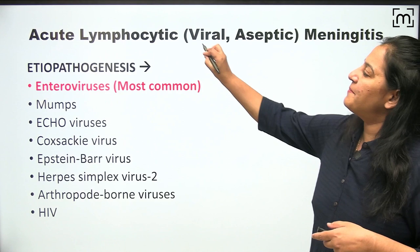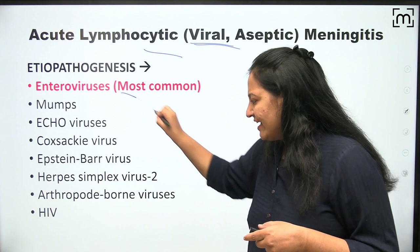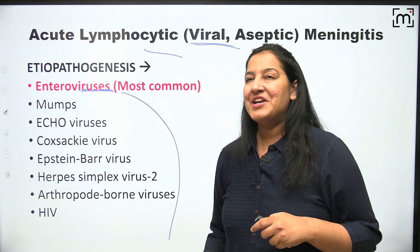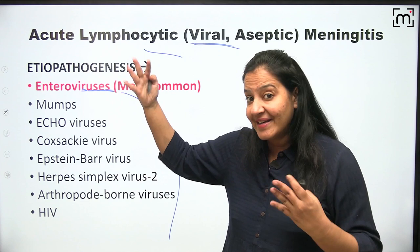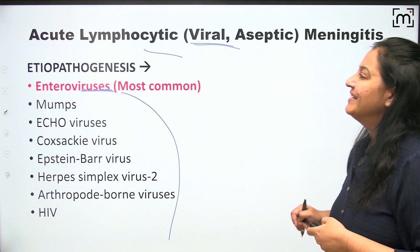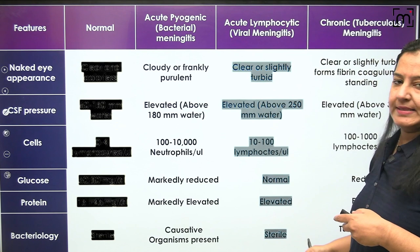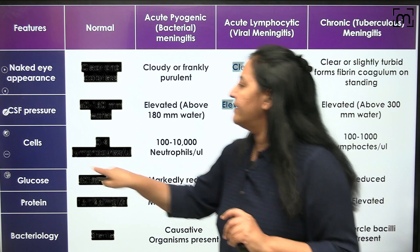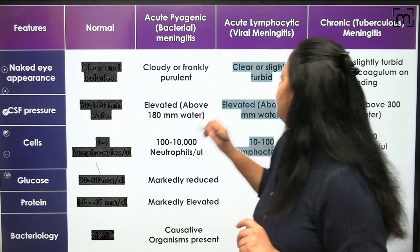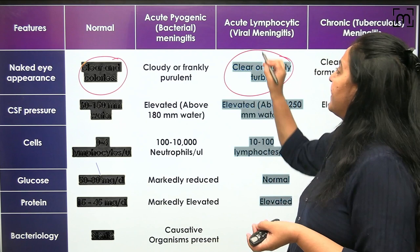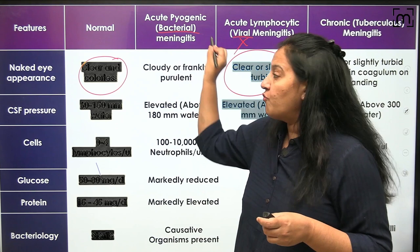The second type is viral or lymphocytic meningitis. There are many viruses which cause it, but the most common overall is Enterovirus — a very important MCQ. Unlike bacteria, it doesn't differ by age. Clinical features are similar to bacterial meningitis but it is more benign and self-limiting — not a medical emergency.